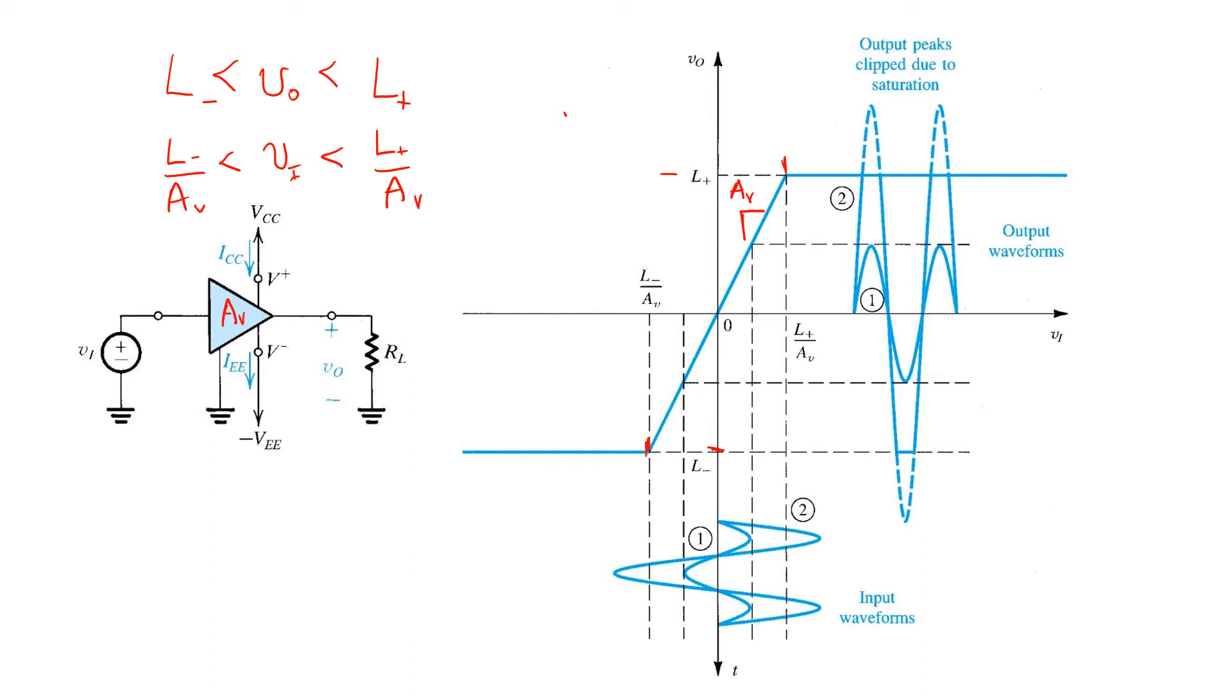Beyond that range, the amplifier output voltage saturates at L+ when the input voltage exceeds the linear range, and at L- when the input voltage is below the linear range.